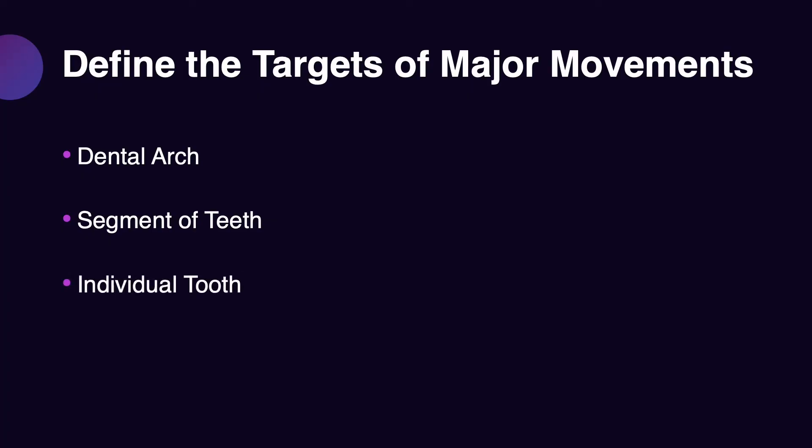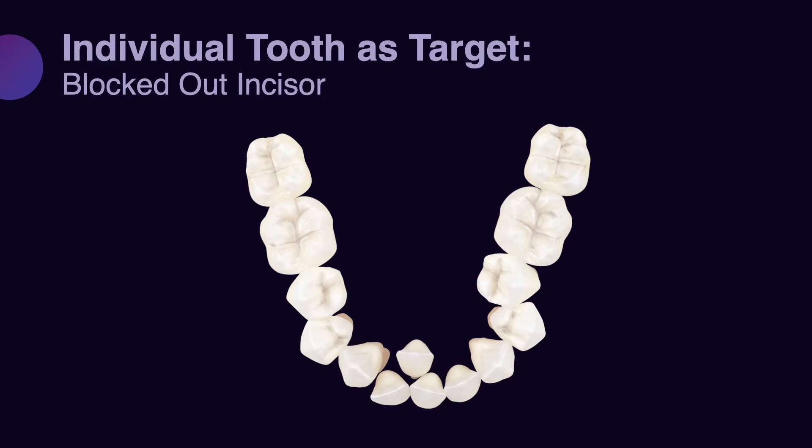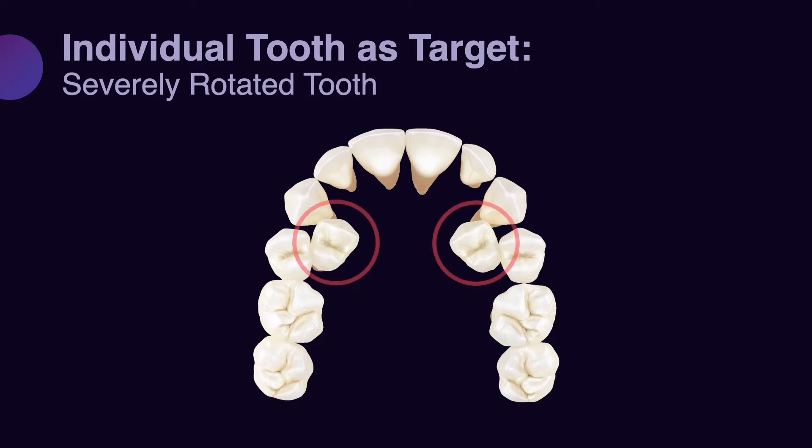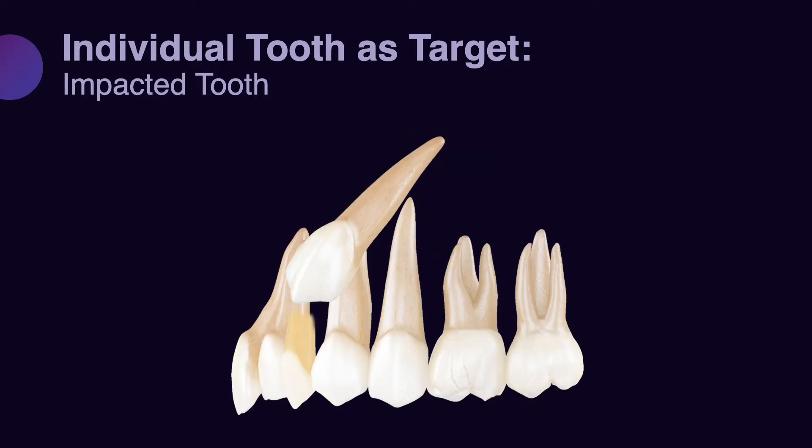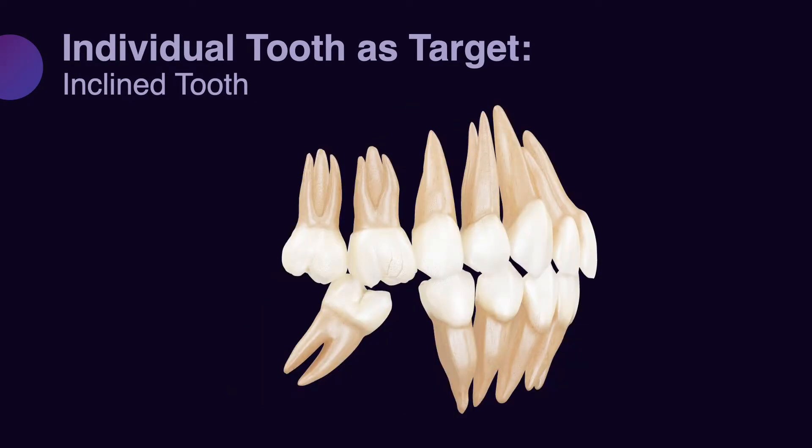The third target that may also require major movement is the individual tooth. A patient may have one or more teeth that require specific attention because they require major movements. Involving these teeth from the start in the design of minor movements — for example, braces or aligners — would be very risky and harmful, because these major movements may cause side effects on the adjacent structures and prolong the treatment. Examples of individual teeth that require major movement include a blocked tooth, a tooth that is very severely rotated, an impacted tooth, and a tooth that requires significant uprighting.